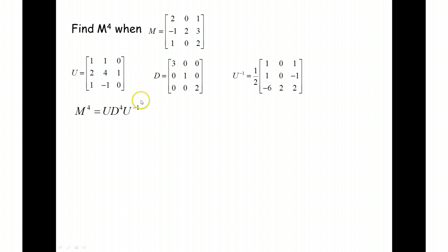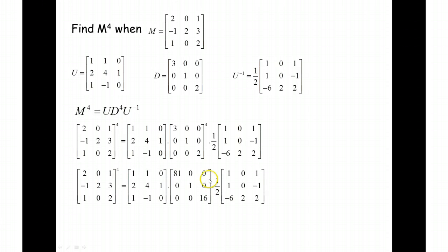And if I take this diagonal matrix to the power of 4, I'm just going to get 3 to the power of 4, 1 to the power of 4, and 2 to the power of 4. So writing it out, it's going to look like this, and now what I want to do is I want to find the product of these three matrices.